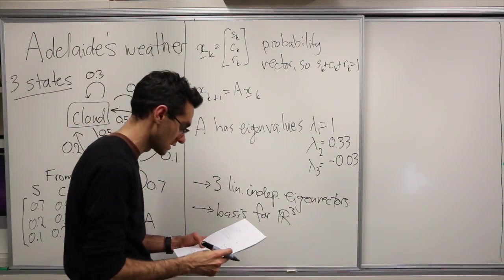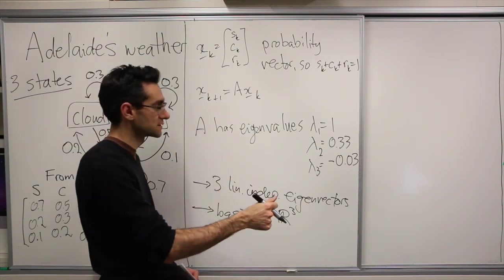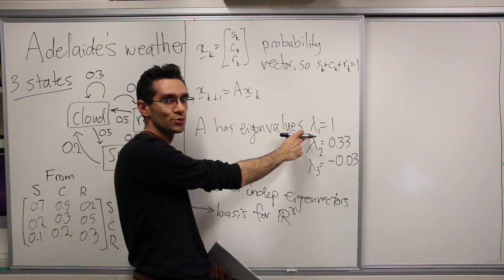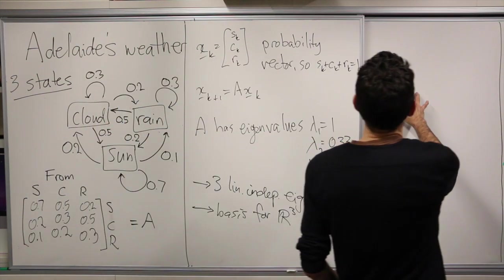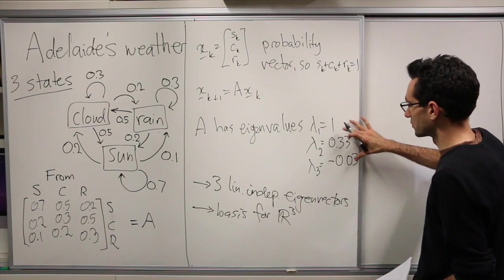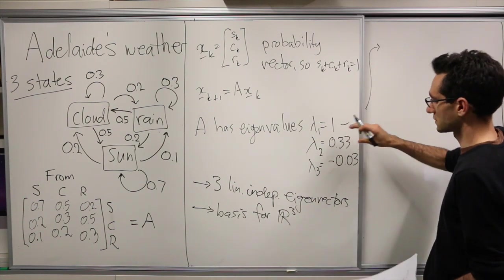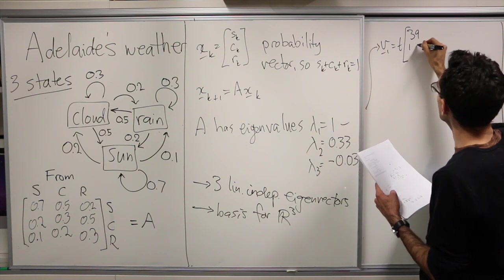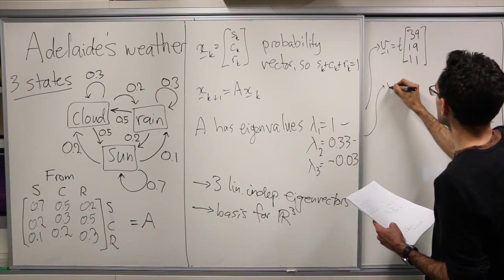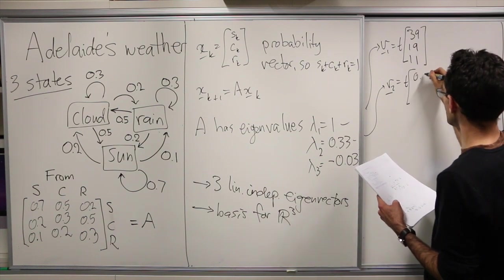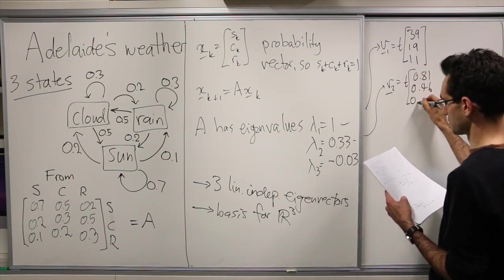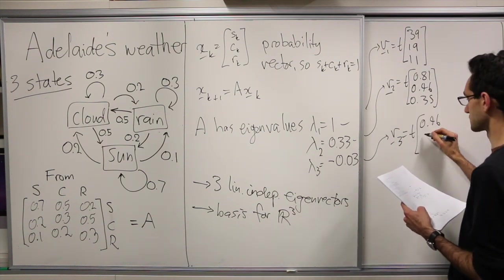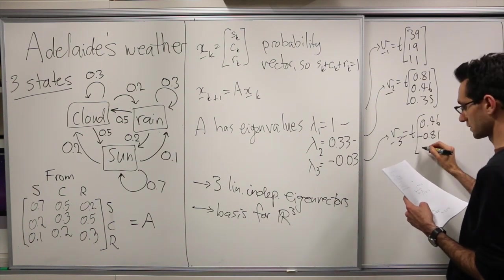And we want to find a steady state vector. So we have a stochastic matrix. It has an eigenvalue 1, and an eigenvector for the eigenvalue 1 that's also a probability vector will be the steady state vector. So let me just write here the corresponding eigenvectors. The eigenvectors corresponding to lambda 1 equals 1, let's say v1 is t times [39, 19, 11]. For this one, v2 is t times [0.81, 0.46, 0.35]. And here we have v3 is t times [0.46, minus 0.81, 0.35].